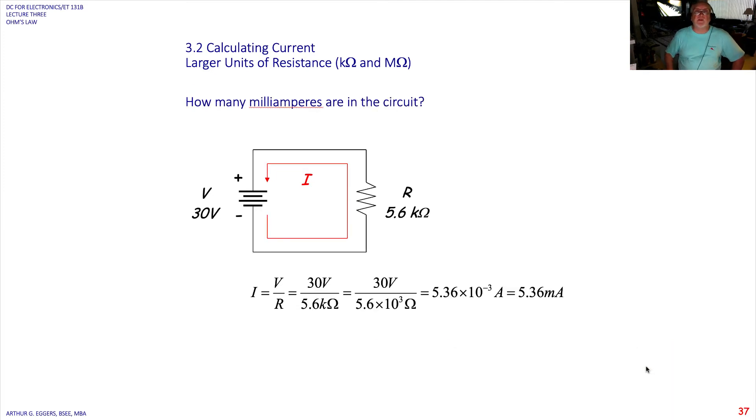How many milliamps are in this circuit? We've got 30 volt source. We've got 5.6k ohm resistor. Again, we put them in the expression and we start manipulating the values. So we have 30 volts divided by 5.6, which is 5.6 times 10 to the third when we change k to the decimal exponent value. So 5.6 divided into 30 is 5.36 times 10 to the minus third or 5.36 milliamps of current.